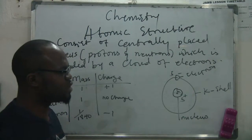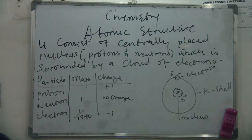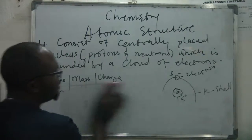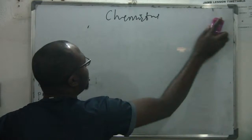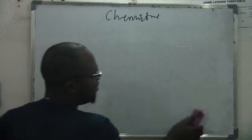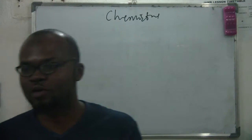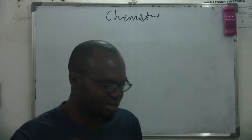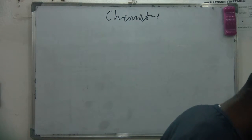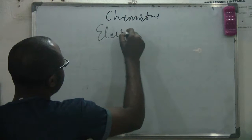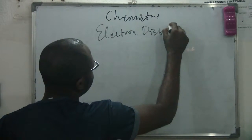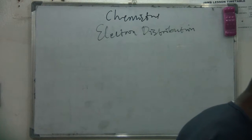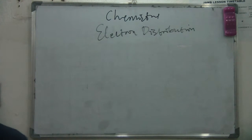The first shell is known as the K shell — always have that in mind as we go forward. Whenever you talk about atomic structure, you're talking about a neutral atom that has a positive nucleus and an electron cloud with a negative charge. Now let's talk about electron distribution — how the electrons are distributed.